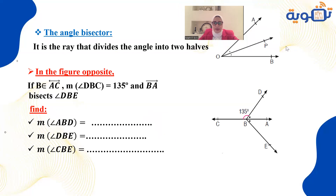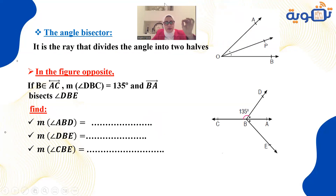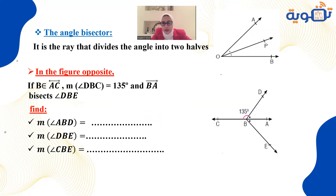The bisector of an angle: from its name, a bisector divides the angle into two equal pieces. Each half will have half the measure. The ray divides the angle into two equal halves. Please read the question very carefully before solving.